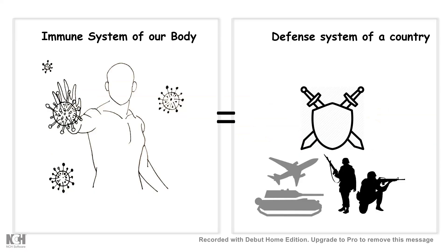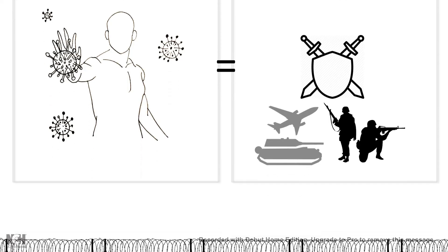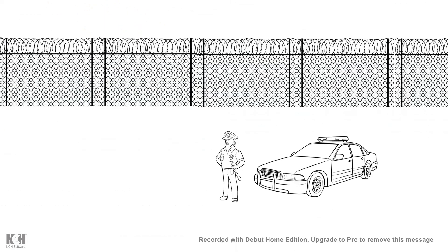We can consider the immune system of our body to be a defense system of our country. If these two are similar, then the antigen presenting cells are very similar to the patrolling police officer. We would always compare our immune situations with the defense analogy, and that would help us to understand these concepts in a better way.